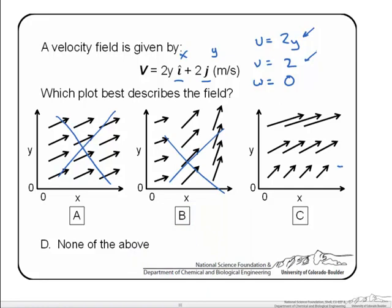Now we look at option C and we see that the y component of velocity is about the same regardless of position. So that would verify that part of our velocity. And as we look at x as we increase along the y axis our x component is increasing. So this plot option C best describes this velocity field.